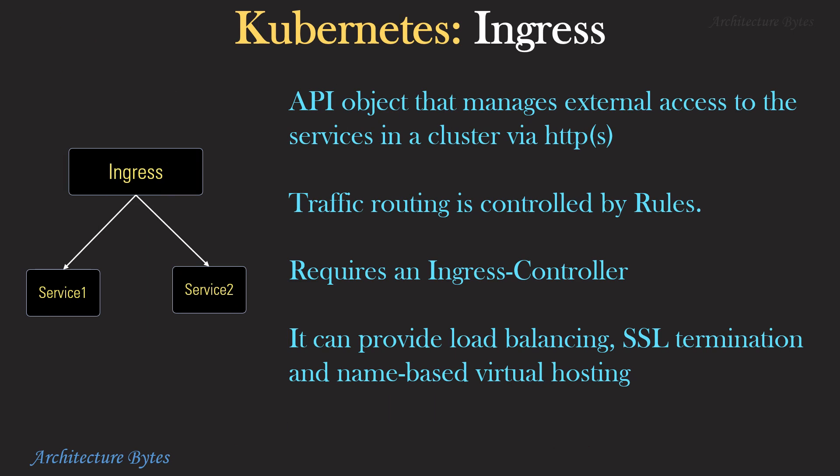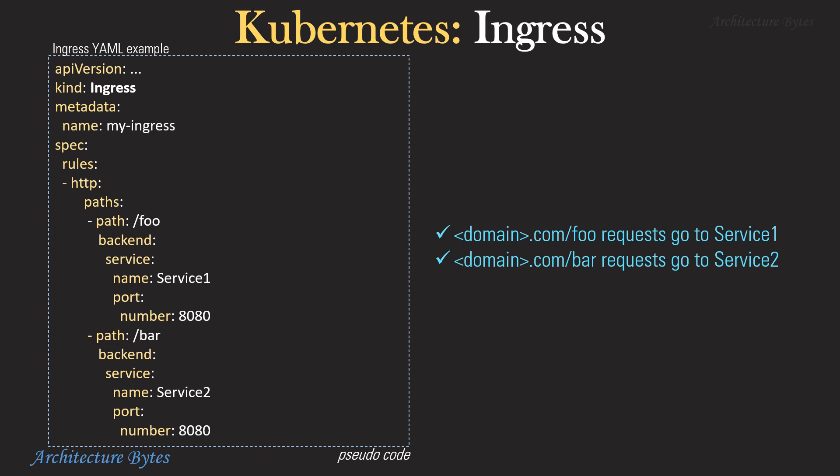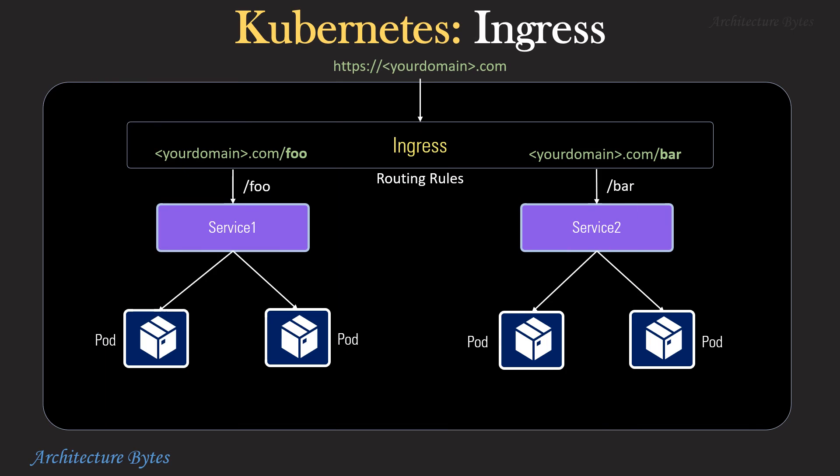Kubernetes Ingress is an API object that manages external access to services in a cluster via HTTP or HTTPS. Traffic routing is done based on pre-configured rules and it requires an Ingress controller to function. It can provide load balancing, SSL termination and name-based virtual hosting. Here is an example Ingress YAML file which has a rule based on paths — all HTTP requests with a /foo path are sent to service1 and those with /bar path are sent to service2. It can integrate directly with services based on path or subdomain. Here is a diagrammatic representation of how this works. Remember that Ingress works on OSI layer 7, that is the application layer.